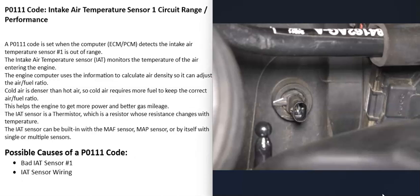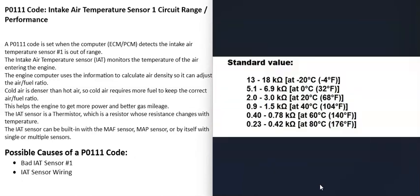These intake air temperature sensors are what's called a thermistor — a resistor whose resistance changes with temperature. You can use a multimeter to test them. Look up the rated values for that particular sensor at a set temperature, set your multimeter to ohms, and check if it matches. For example, at 68 degrees Fahrenheit, it might read around two to three kilo-ohms — though there are differences between sensors.